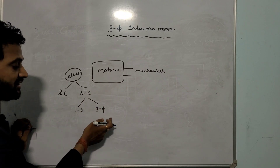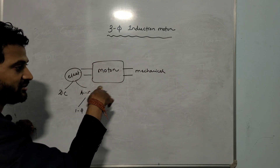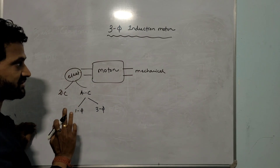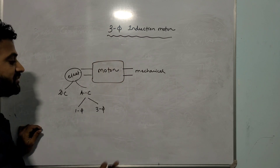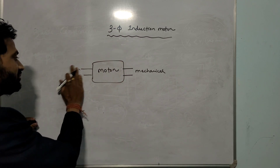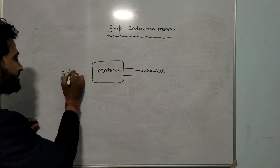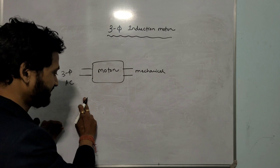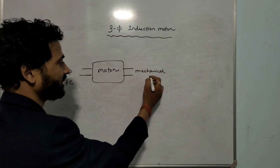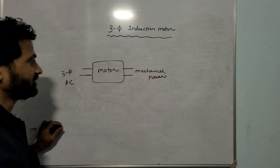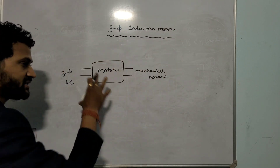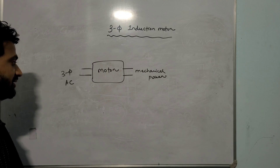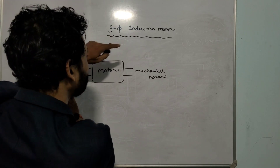AC is again of two types: single-phase and 3-phase. If it is a single-phase AC supply, we call it a single-phase motor. If the input is 3-phase, that is called a 3-phase motor. Our topic is the 3-phase induction motor, so the input is 3-phase AC. It is a motor which converts 3-phase electrical AC supply to equivalent mechanical power. It is called an induction motor because the principle is based on Faraday's law of electromagnetic induction.